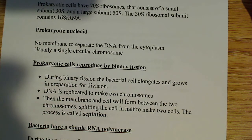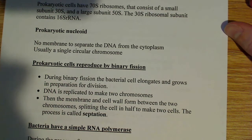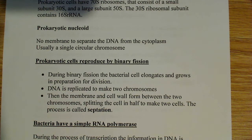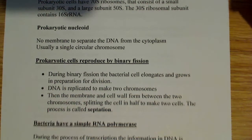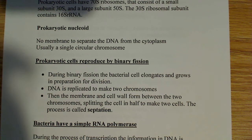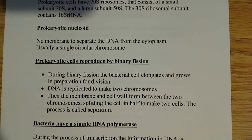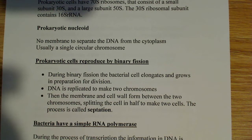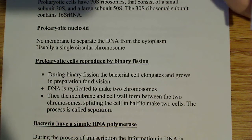The prokaryotic nucleoid has no membrane to separate the DNA from the cytoplasm; it's usually a single circular chromosome, in most cases. Prokaryotic cells also reproduce by binary fission — that's why so many bacteria can be generated in a short time. During binary fission, the cell elongates and grows in preparation for division. The DNA is replicated to make two chromosomes, both attached to the envelope. The membrane and cell wall then form between them — a process called septation — creating a septum in the middle that divides the cell into two independent daughter cells.